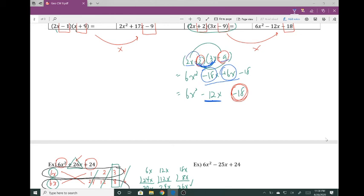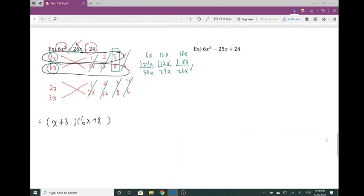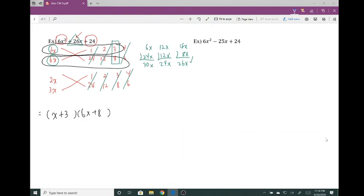So I did not multiply 2x times 2 to get negative 18. In fact, I multiplied 2x times negative 9. Likewise, I multiplied positive 2 times 3x to get 6x. So I did not multiply the numbers next to each other.